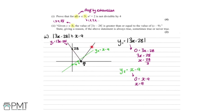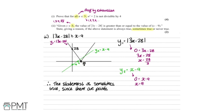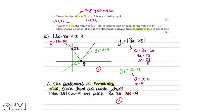So sometimes |3x − 28| is greater than x − 9, and at other points x − 9 is greater than |3x − 28|, and at the intersection points they are equal. Therefore the statement is sometimes true. We can write: the statement is sometimes true, since there are points where |3x − 28| < x − 9 and points where |3x − 28| > x − 9. For the marks: one mark for the accurate graph with the V-shape, the line, and the intersection area; and one mark for stating 'sometimes true' with the explanation.